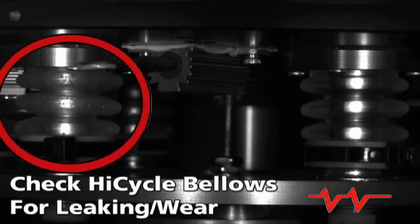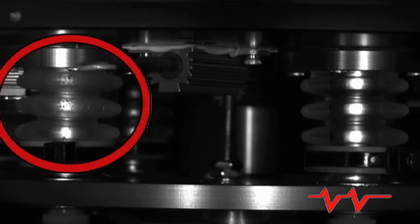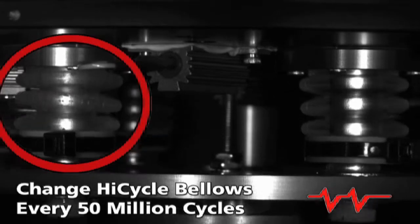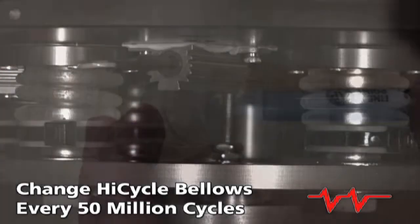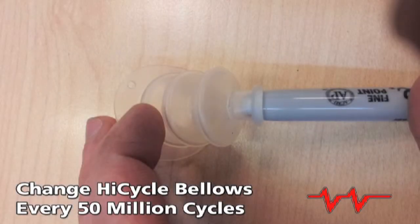The HiCycle bellows experience stress over time and will fail if they are not regularly changed. It is recommended that the bellows are changed every 50 million cycles to prevent bellows failure during HiCycle operation.